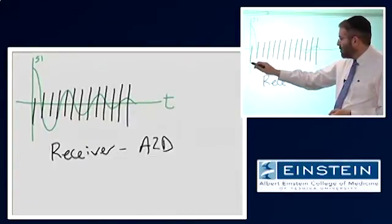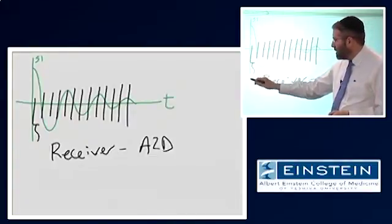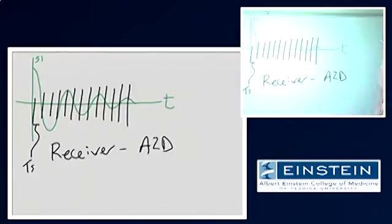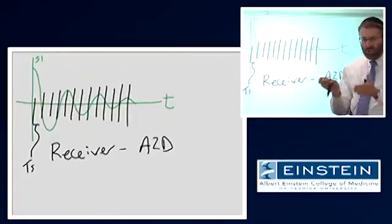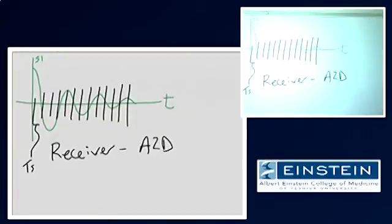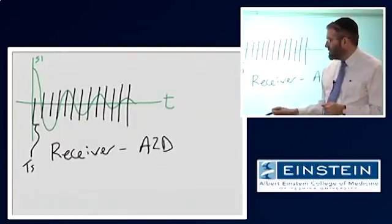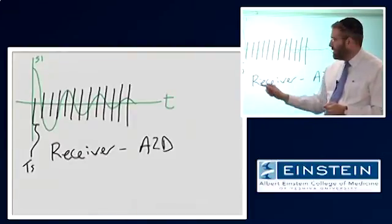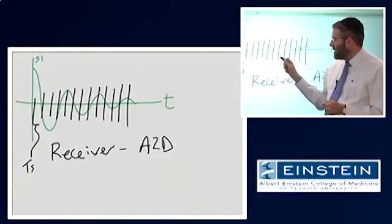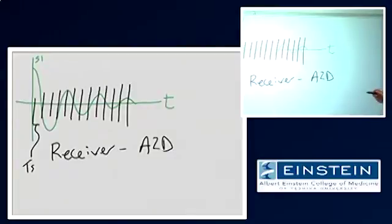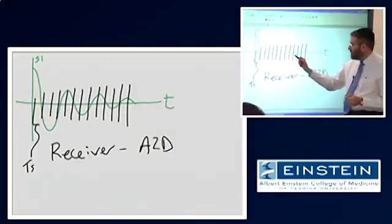So it takes, during some period of time, this period of time is called the sampling time, T sub s. It asks the question, during this time window, how much signal is there to be detected? And it goes ahead and records all of the signal available during that time, and does it again and again and again and again.